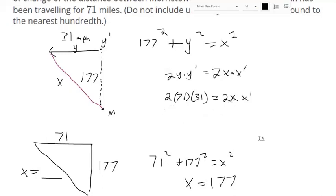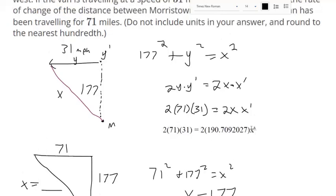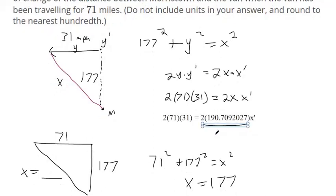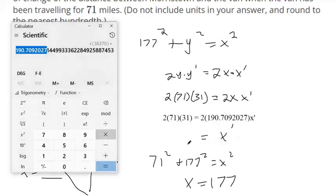Okay, so let me type all this out. We got 2 times 71 times 31 equals 2 times that x value at that instant. And now we can solve for x prime, the rate of change of x with respect to time. We just have to divide these from both sides. Right now it's just a little bit of algebra. So when I do that, let's figure out what 2 times that 190 is. We're going to divide that from both sides. So we got 2 times 71 times 31 divided by that. So I got 11.54.